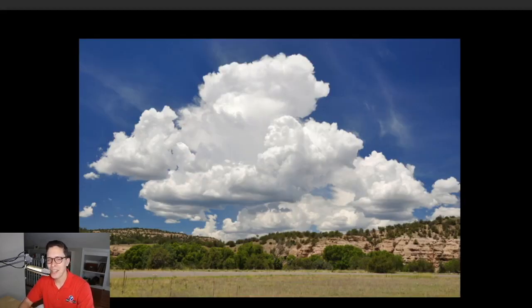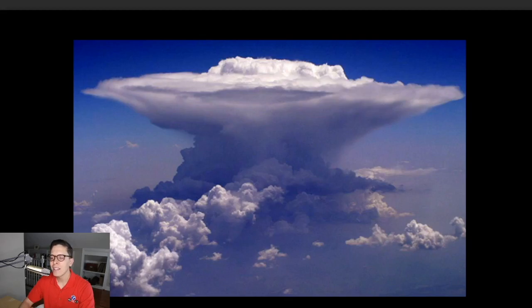These are called cumulus clouds. They usually form on hot and sunny days. But they can become a little bit more than cumulus clouds if the conditions are right. Sometimes they become cumulonimbus clouds, and that's a thunderstorm.